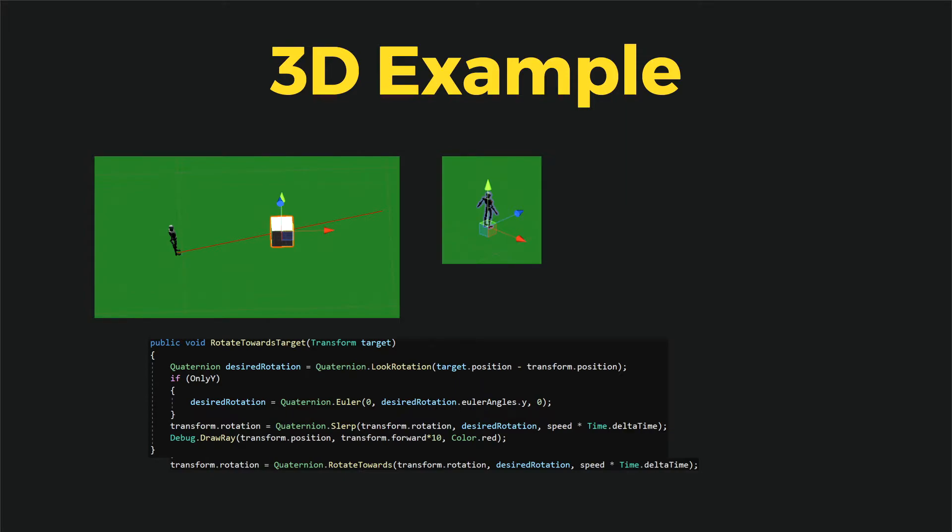So we can see that LookRotation now only takes direction and calculates the correct rotation on every plane. So on x-z plane and on x-y and z-y planes. And that's why we have the flag only y, to make the robot rotate only around the y-axis.